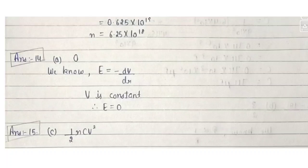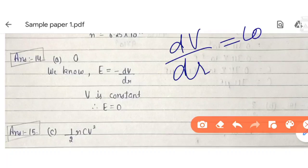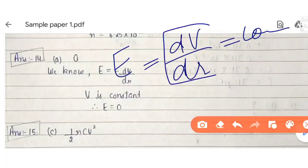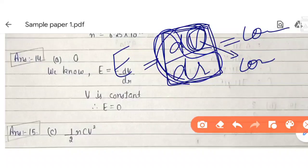If electric potential V is constant, then E = −dV/dr. Since V is constant, dV/dr = 0, which means the electric field will be zero.